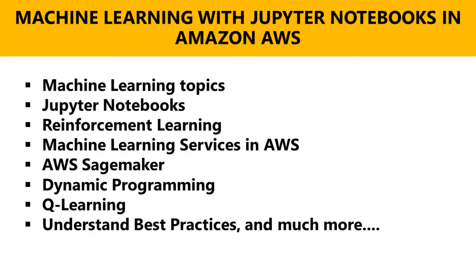In this course, we are going to start off with the basics of what AWS machine learning is — so if you're a beginner, perfect. We're also going to explain the types of machine learning in a manner that is most understandable, and then we are going to apply all of these concepts using Jupyter Notebooks and work with Amazon SageMaker as well.